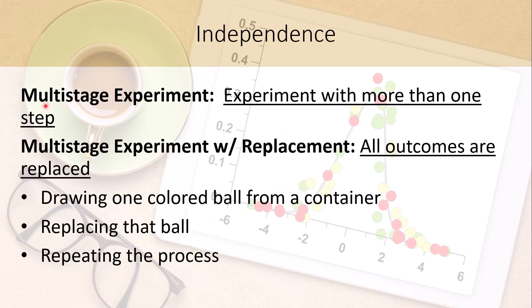The first thing we need to talk about is the idea of a multi-stage experiment — and a multi-stage experiment is simply an experiment with more than one step. For example, flipping a coin twice is a multi-stage experiment. Rolling a die twice is a multi-stage experiment. You also have a multi-stage experiment depending upon how you observe the outcome.